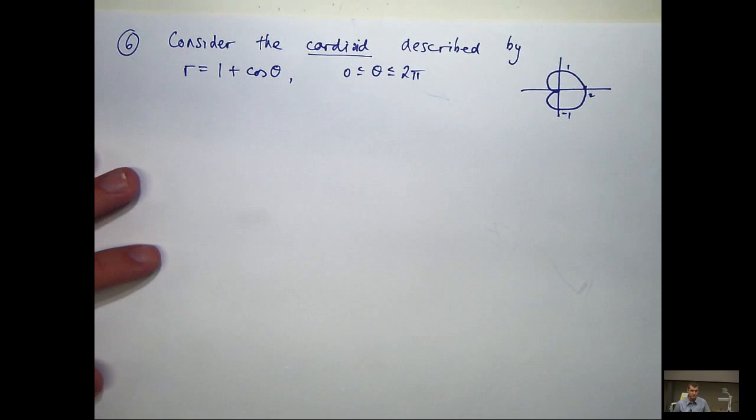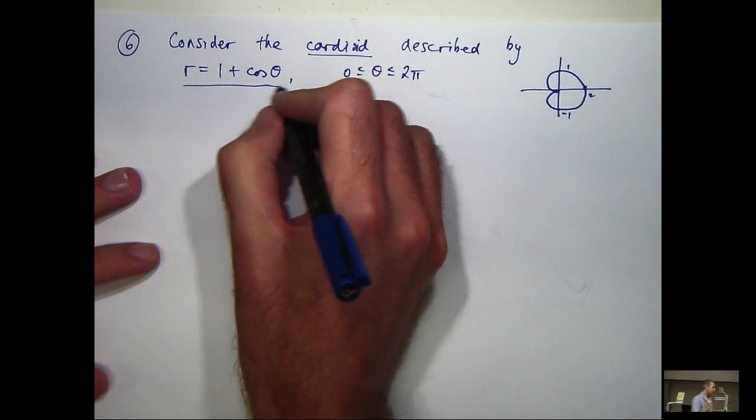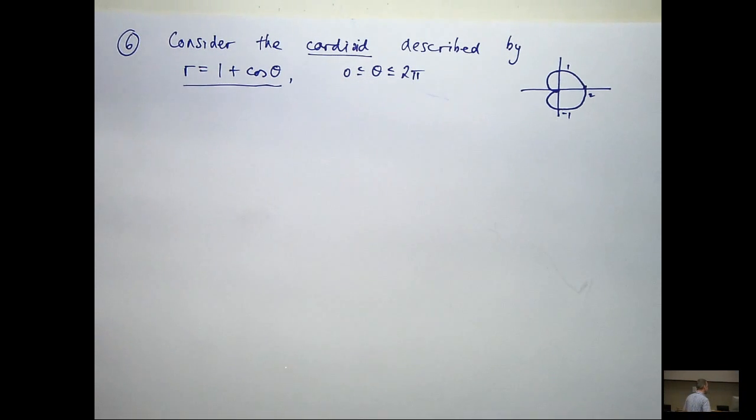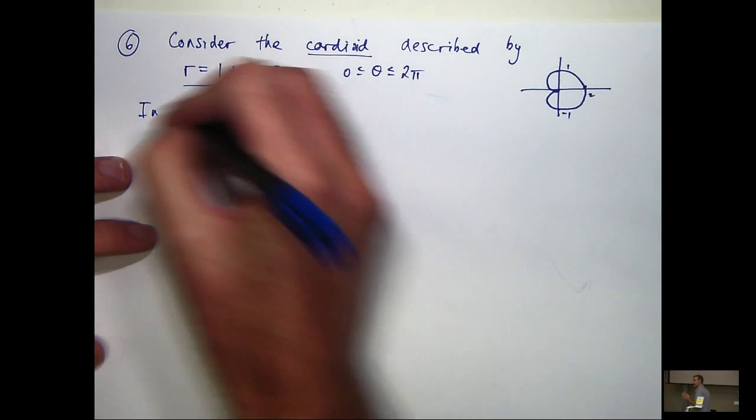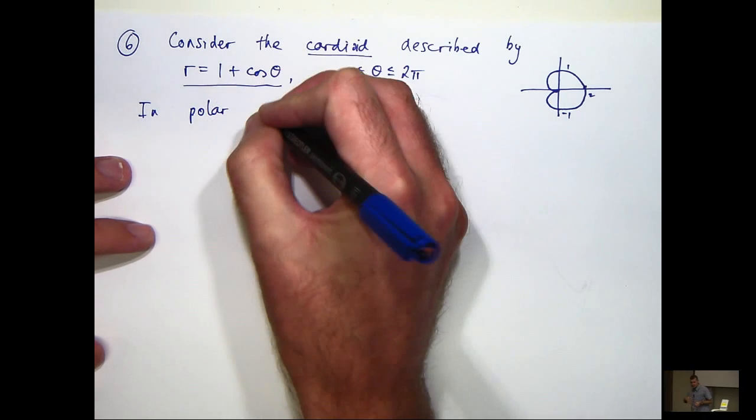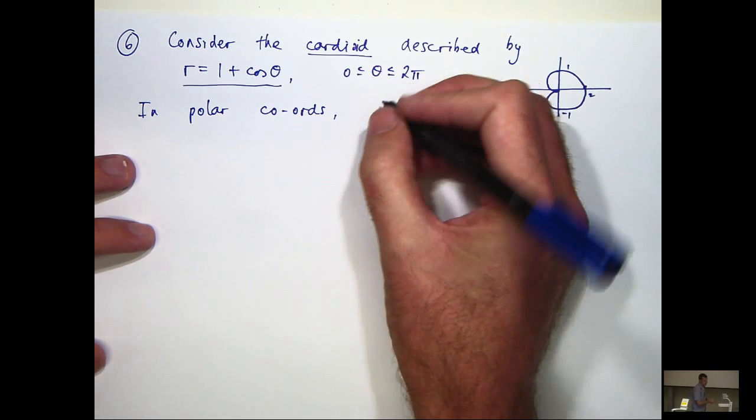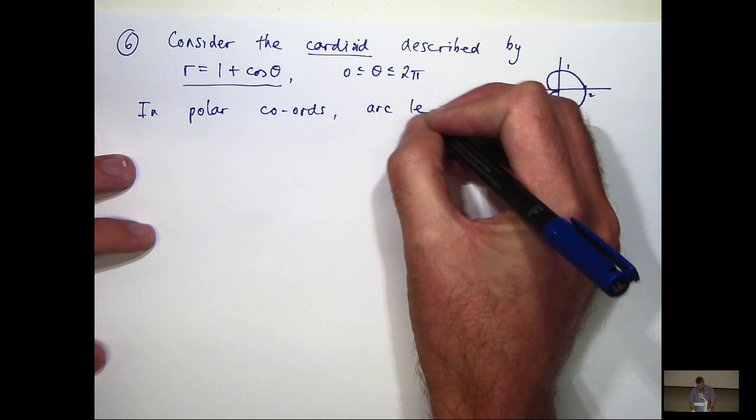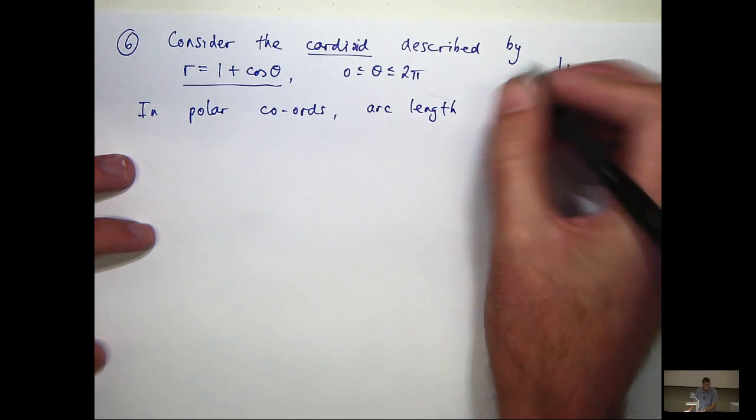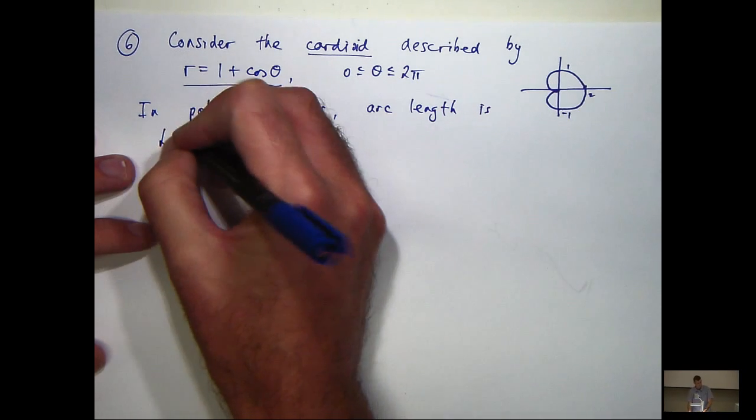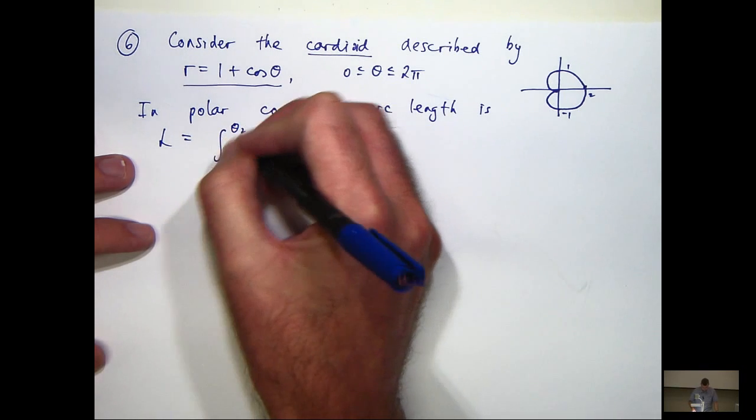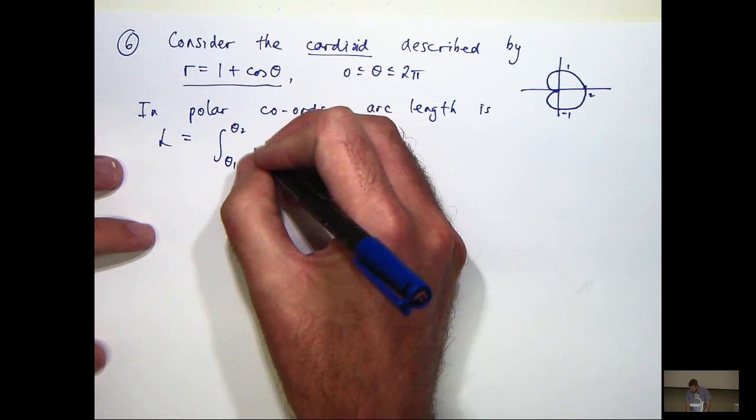Okay, so we're working in polar coordinates here. Arc length has a special formula, and here it is: L equals the integral from theta_1 to theta_2 of the square root of r squared plus (dr/dθ) squared dθ.